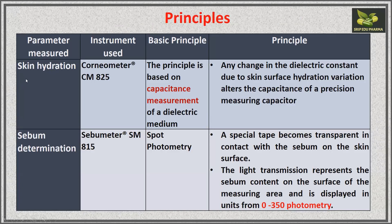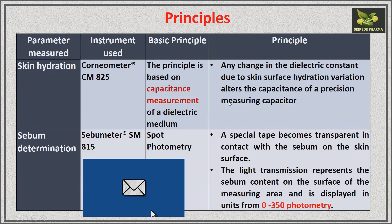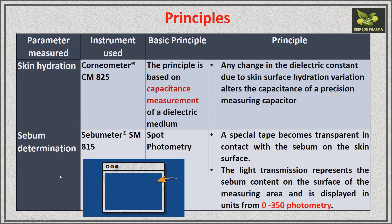For skin hydration, the instrument used is the corneometer. The basic principle is that it is based on capacitance measurement of a dielectric medium. Any change in the dielectric constant due to skin surface hydration variation alters the capacitance of a precision measuring capacitor. Even very minute changes due to an increase in water content are measured by this instrument.